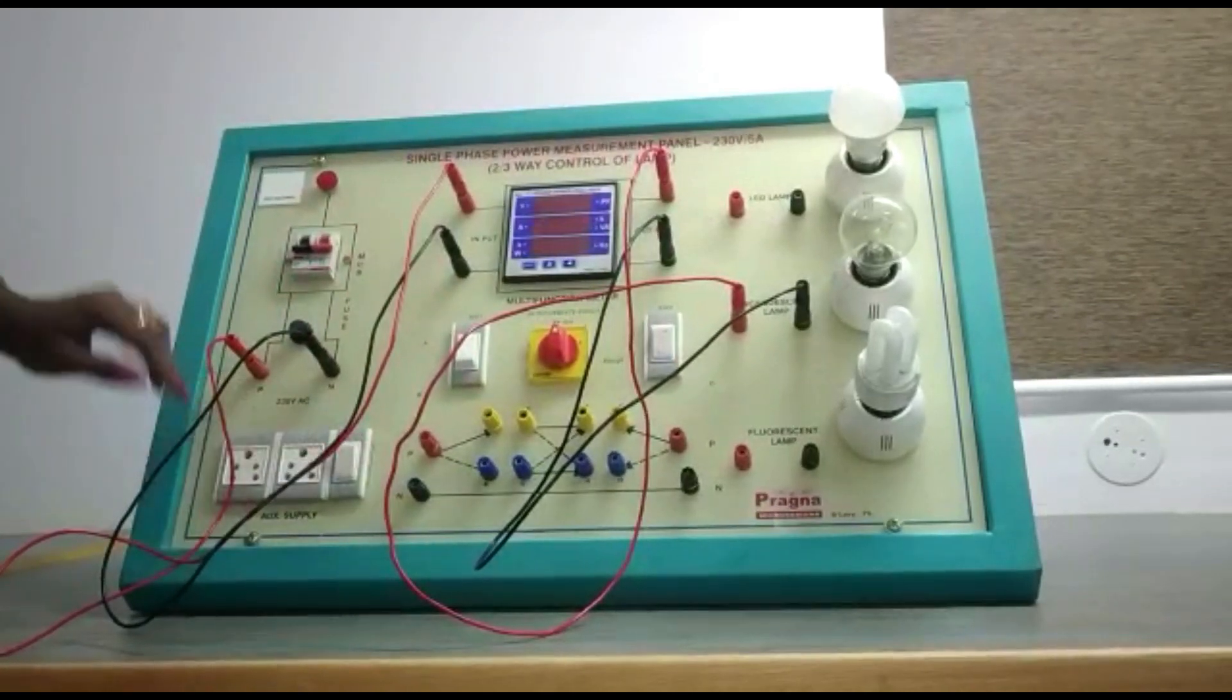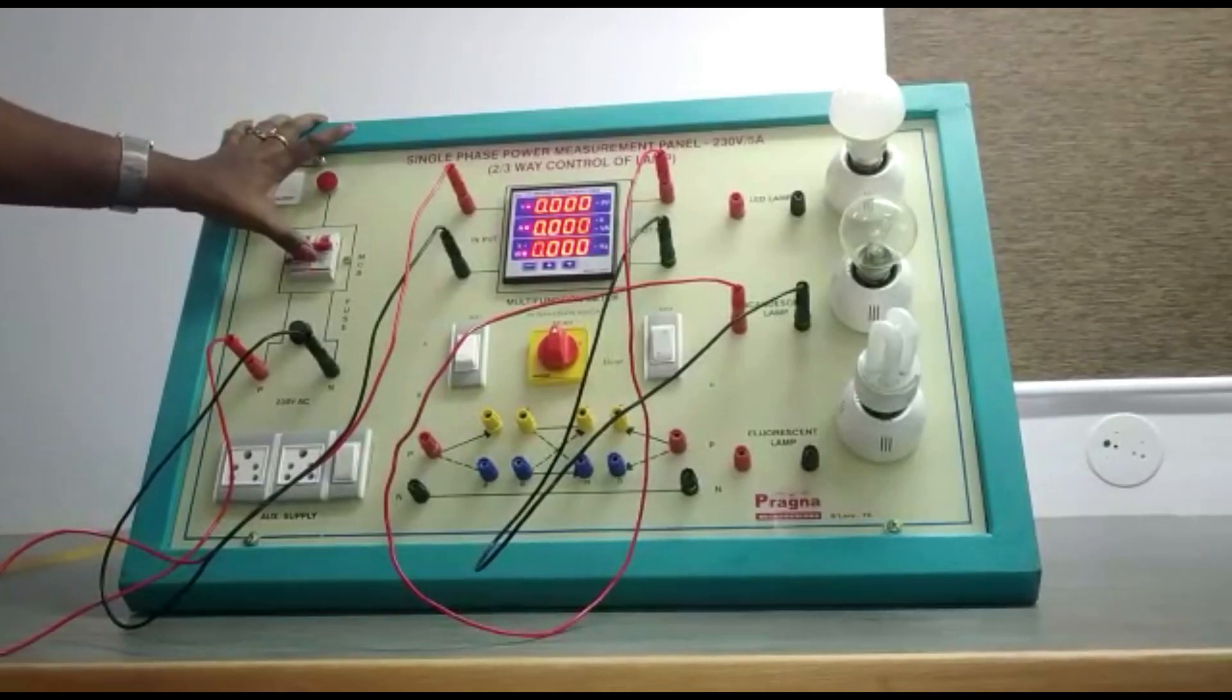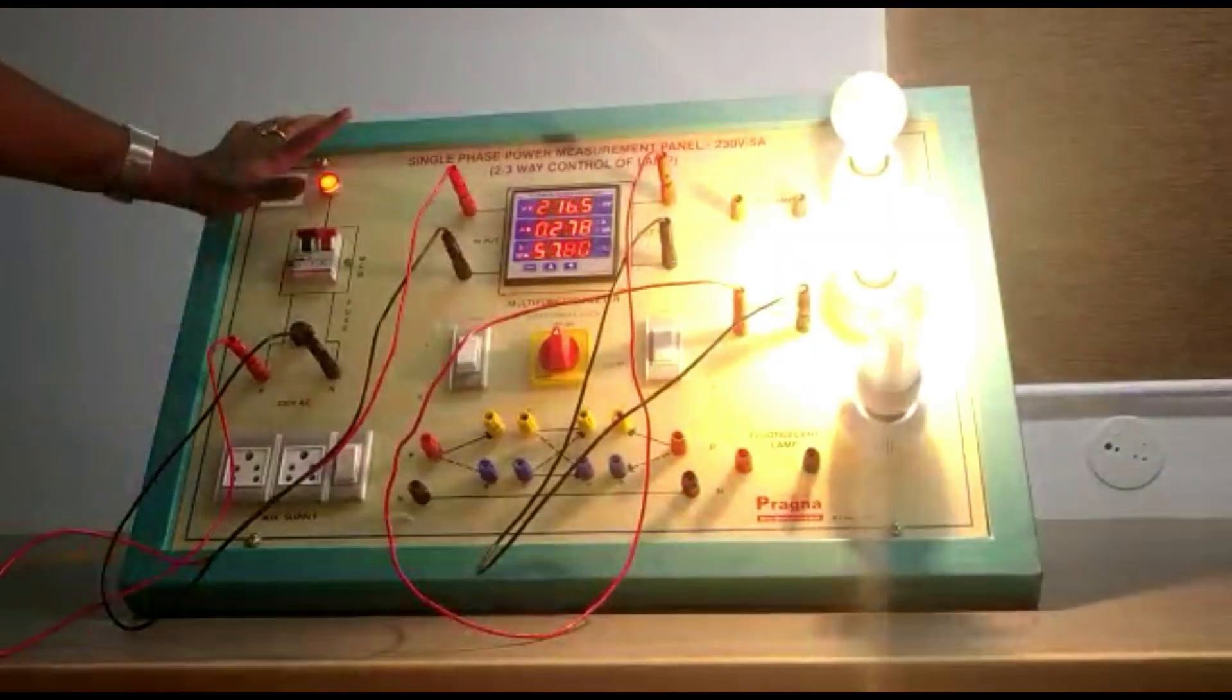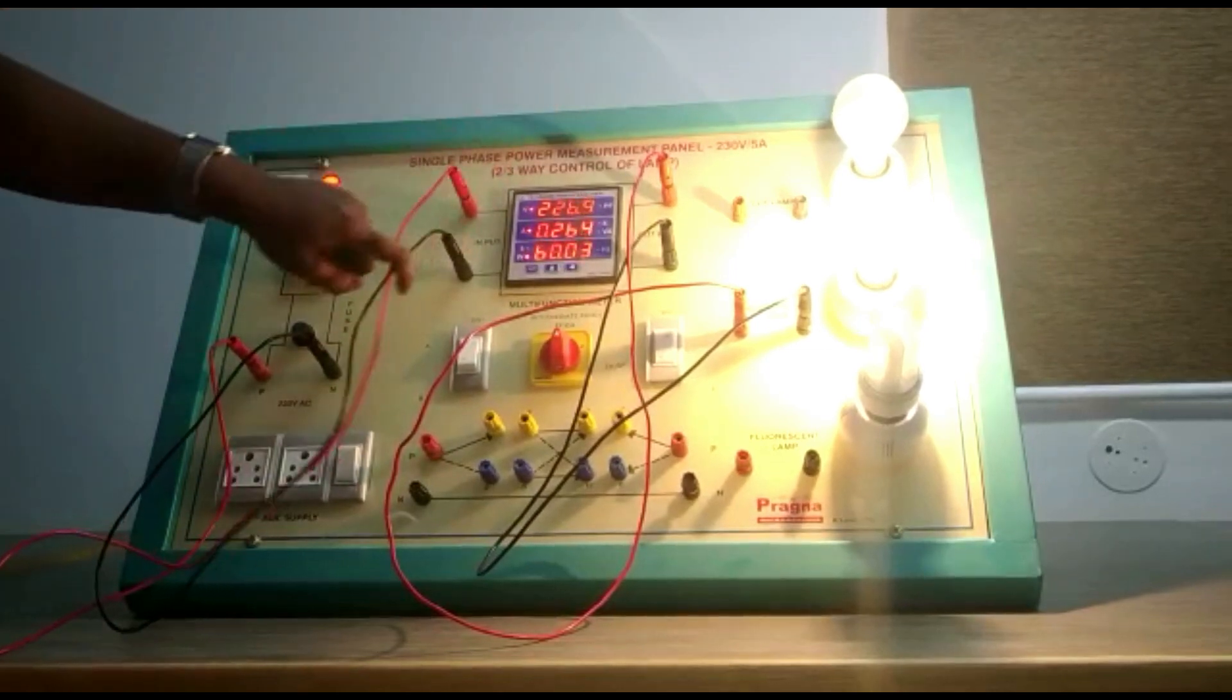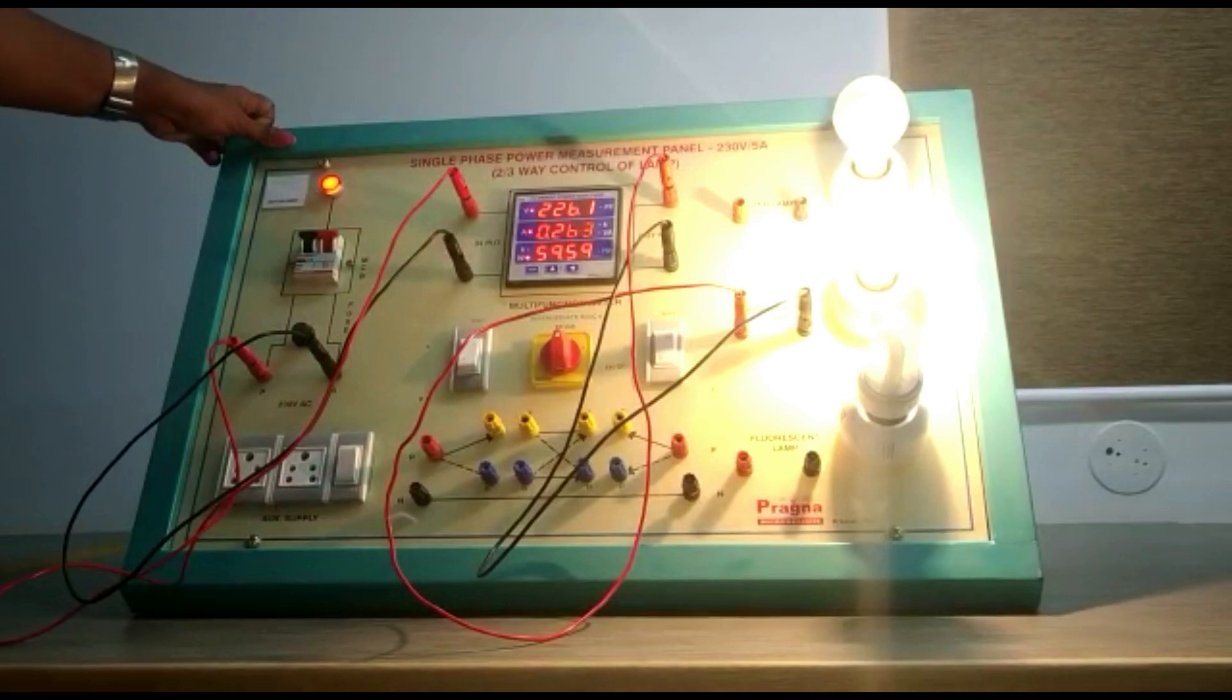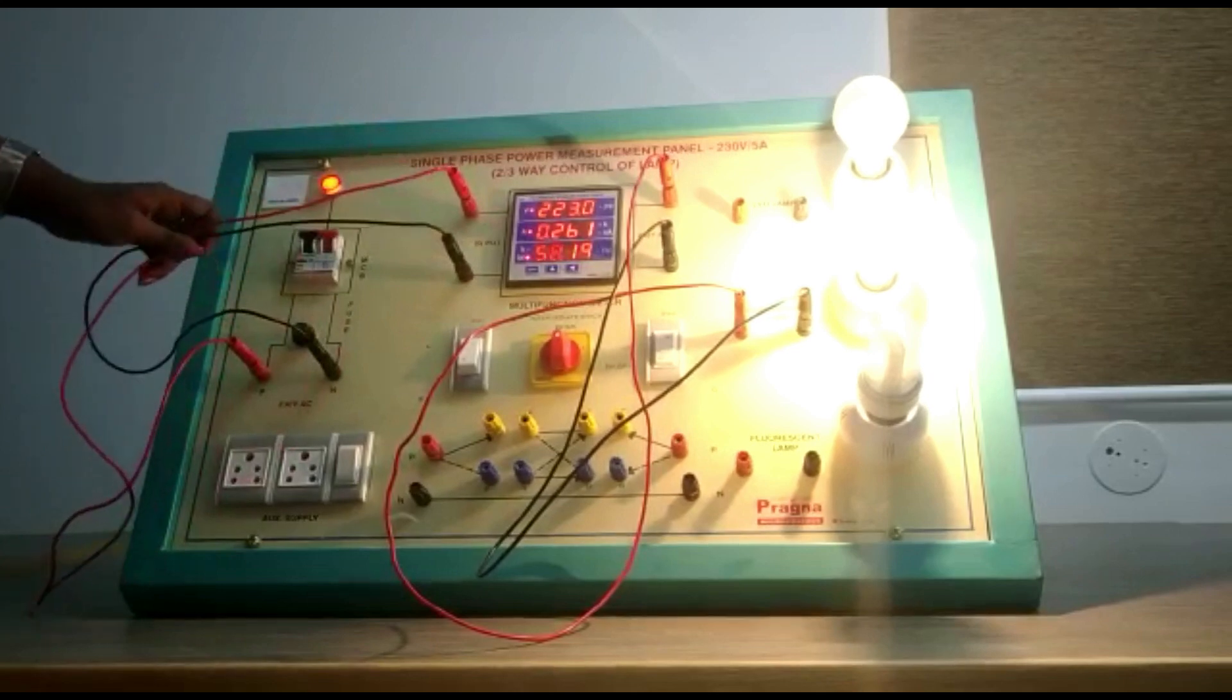Now we'll check the current, power, and power factor of the incandescent lamp. As you can see, the meter directly shows me the voltage, current, and power readings. It is 226.9 volts, 0.263 amperes, and 59.59 watts. You need to note it down into your manuals or data sheets.